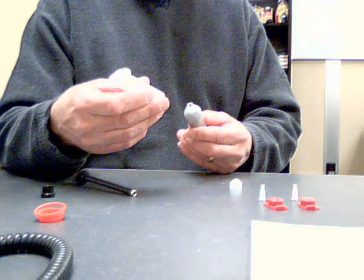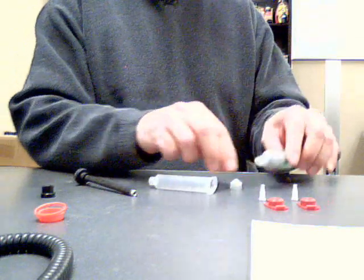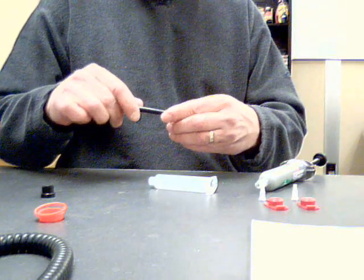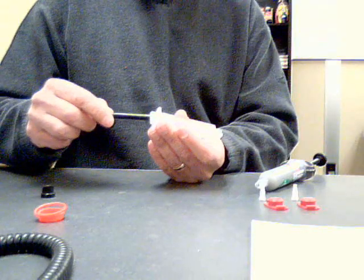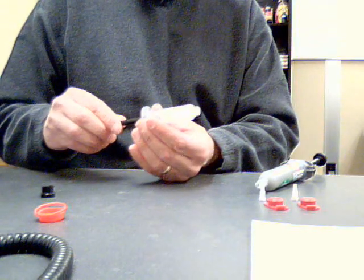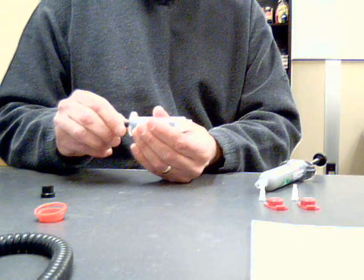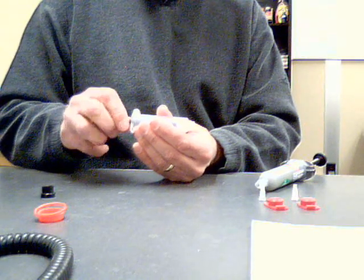Before I attach my syringe, I'm going to take my piston, attach it to this installation tool, and pre-plunge this piston all the way to the bottom of this syringe. Make sure it's fully engaged and there's no air at the bottom.